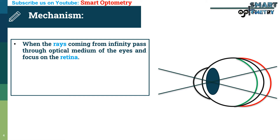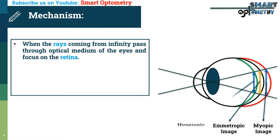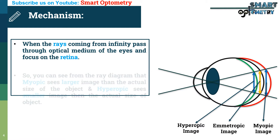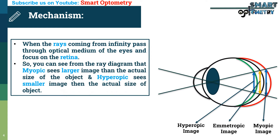Now see — this is the size of image of an emmetropic eye, this is the size of image of a myopic eye, and this is the size of image of a hyperopic eye. You can see from the ray diagram that myopic sees a larger image than the actual size of the object, and hyperopic sees a smaller image than the actual size of the object.